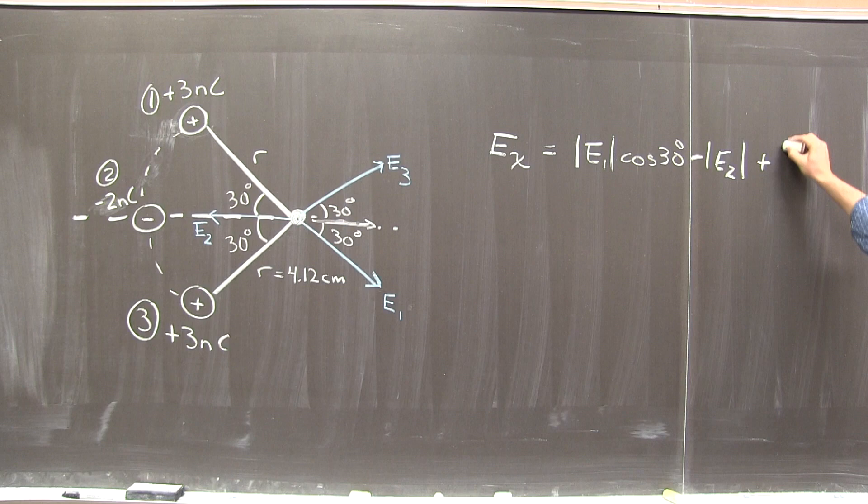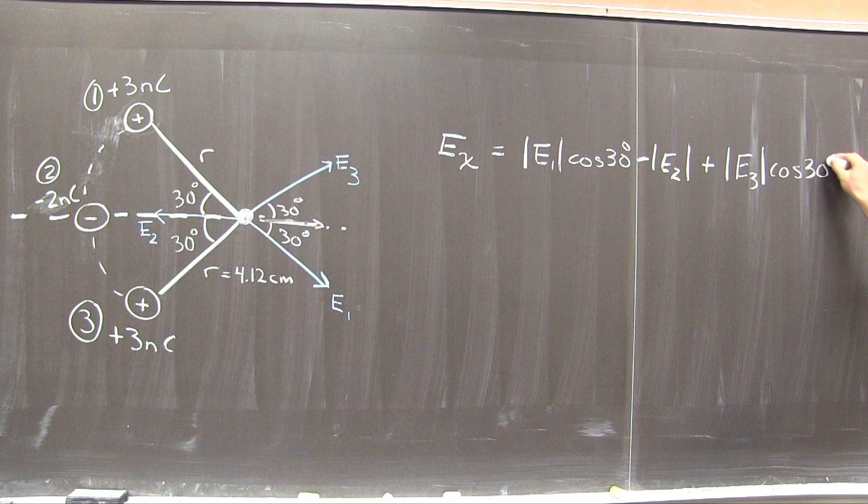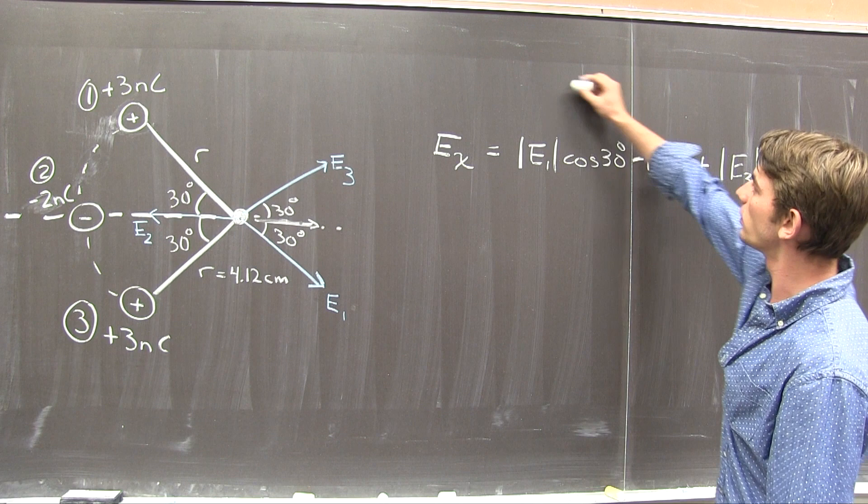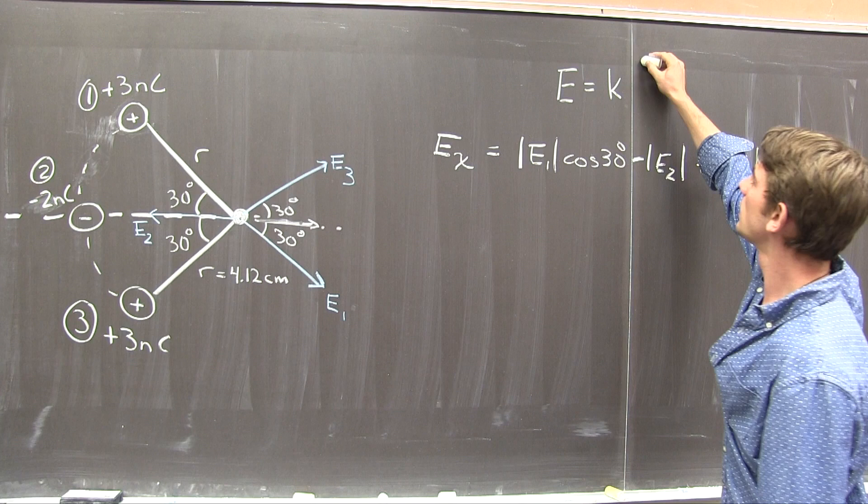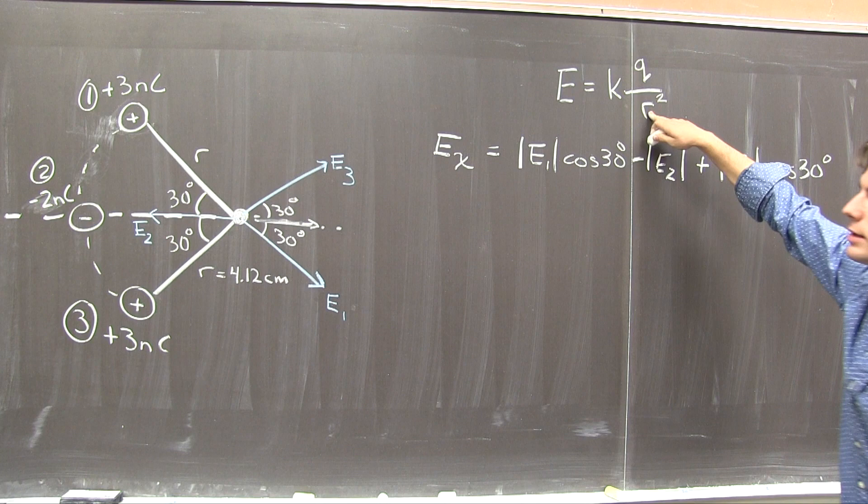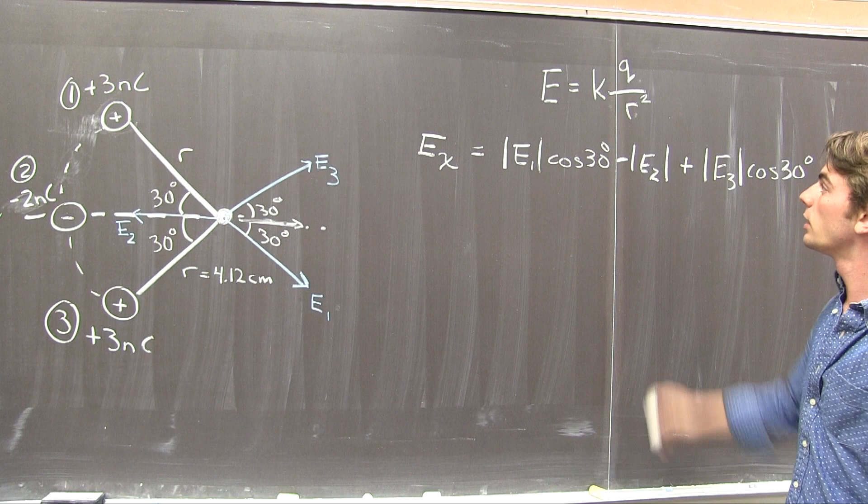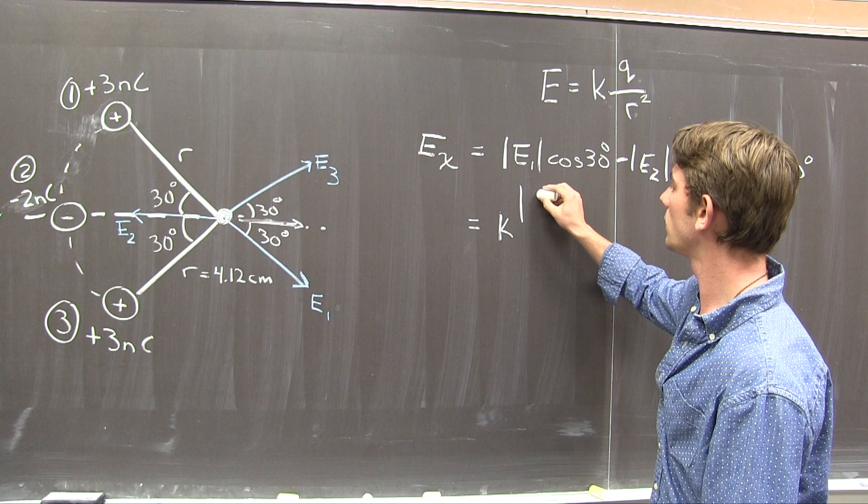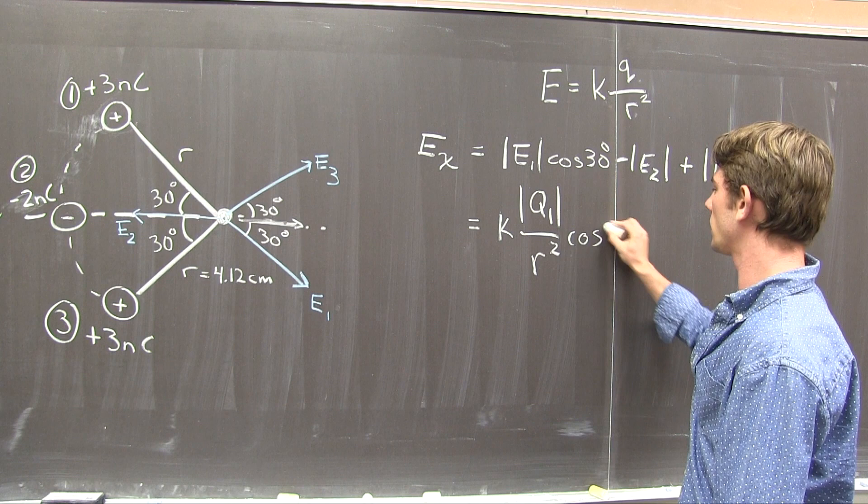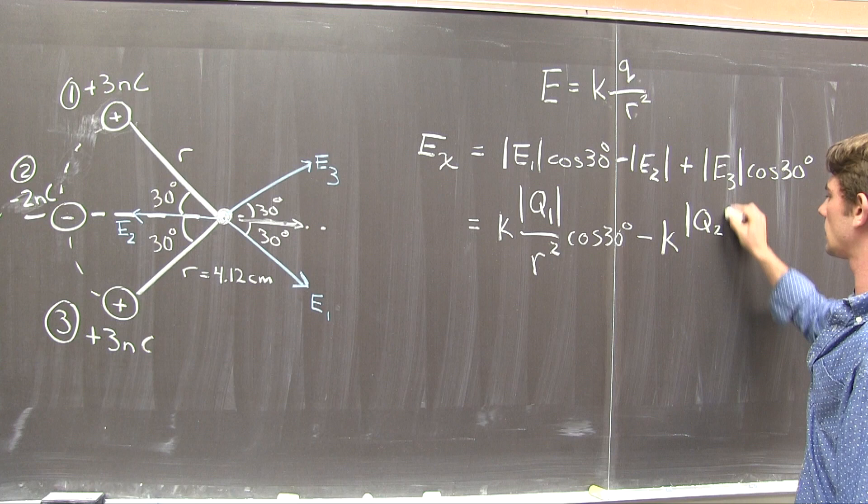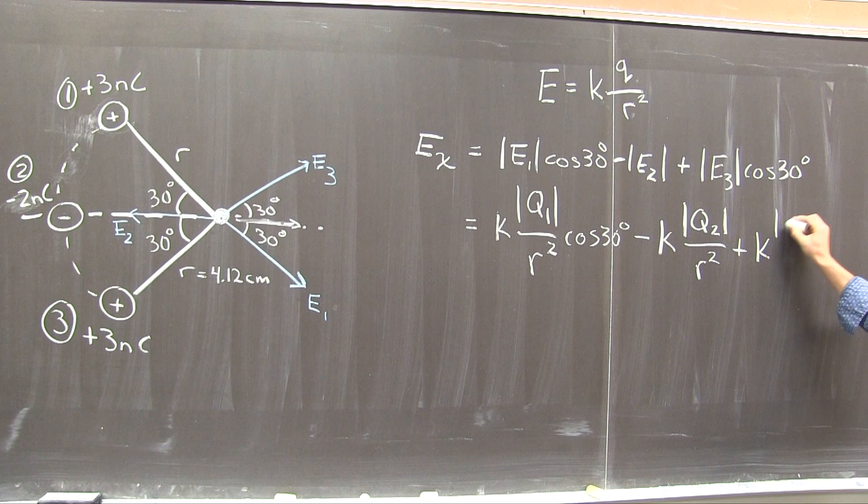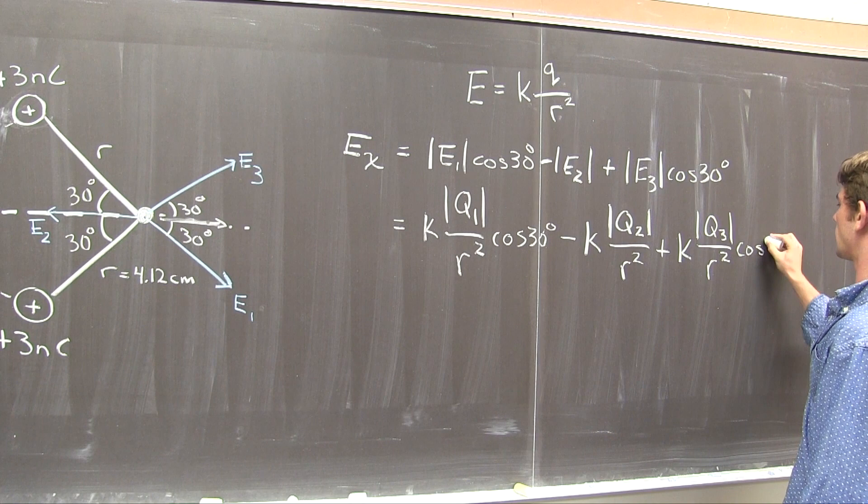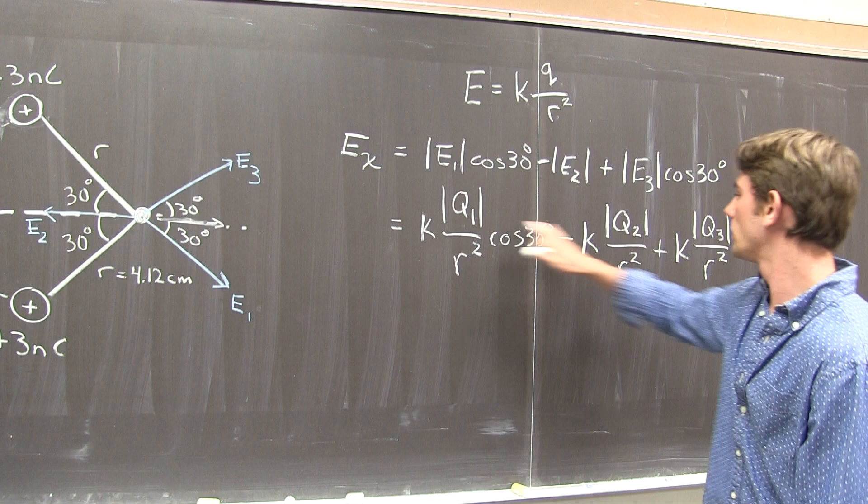Then, to complete this, we keep in mind that the electric field due to point charges is equal to Coulomb's constant times the value of that charge divided by R squared, where R is the distance between the location of the charge and the location in space you're talking about. So using this, we find that the overall x component is K times the magnitude of Q1 all over R squared times the cosine of 30, minus K times the magnitude of Q2 all over R squared, plus K times the magnitude of Q3 all over R squared and again a cosine of 30. Now we know the values of Q1, Q2, and Q3 given in the picture, and R is also given as 4.12 centimeters, and K is Coulomb's constant.